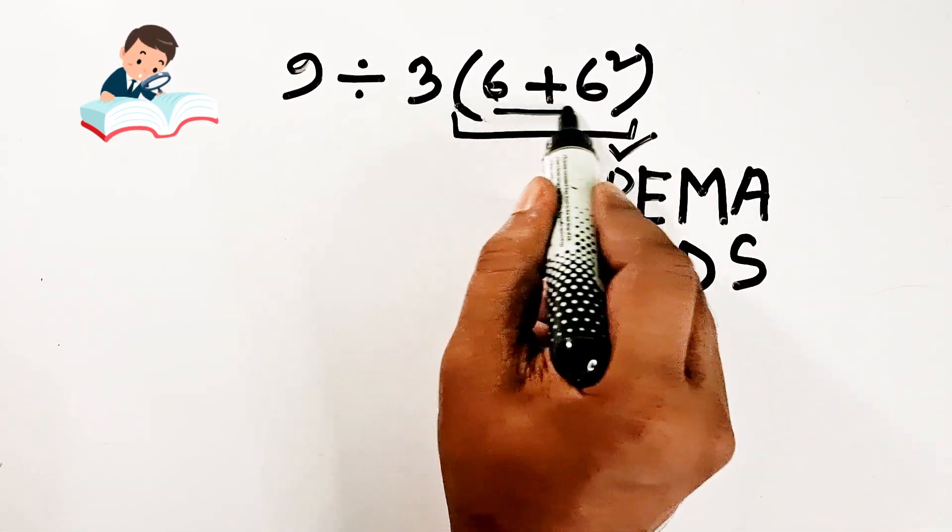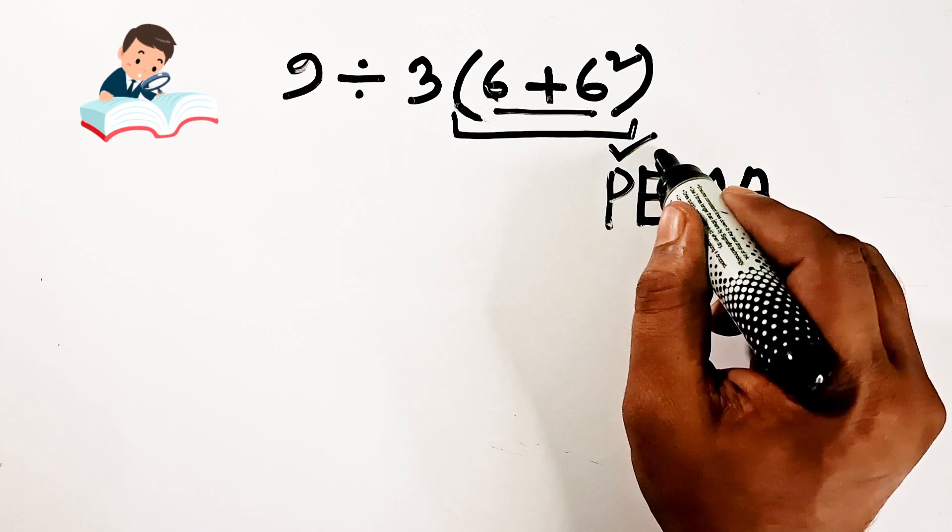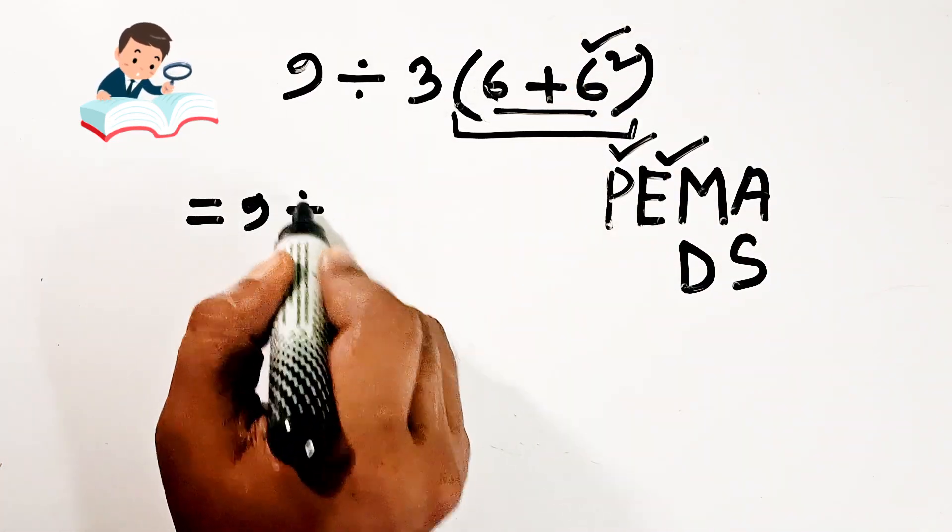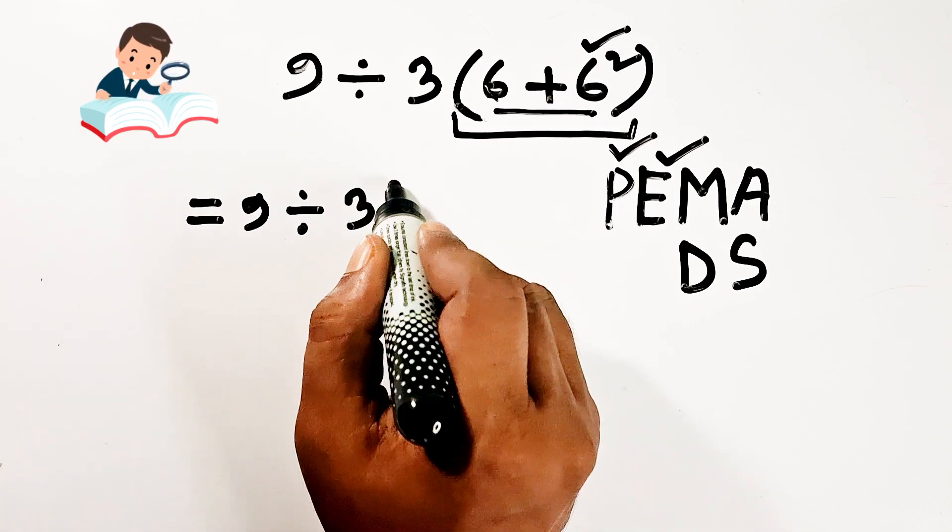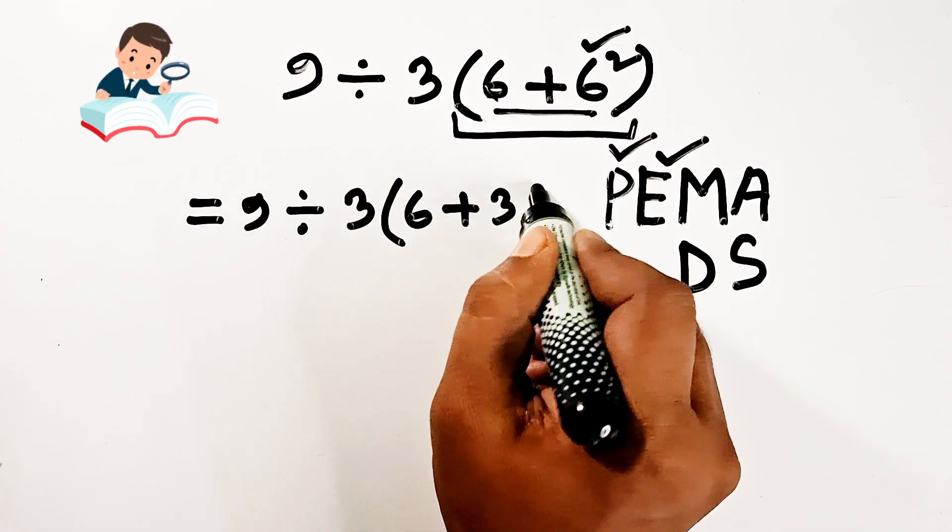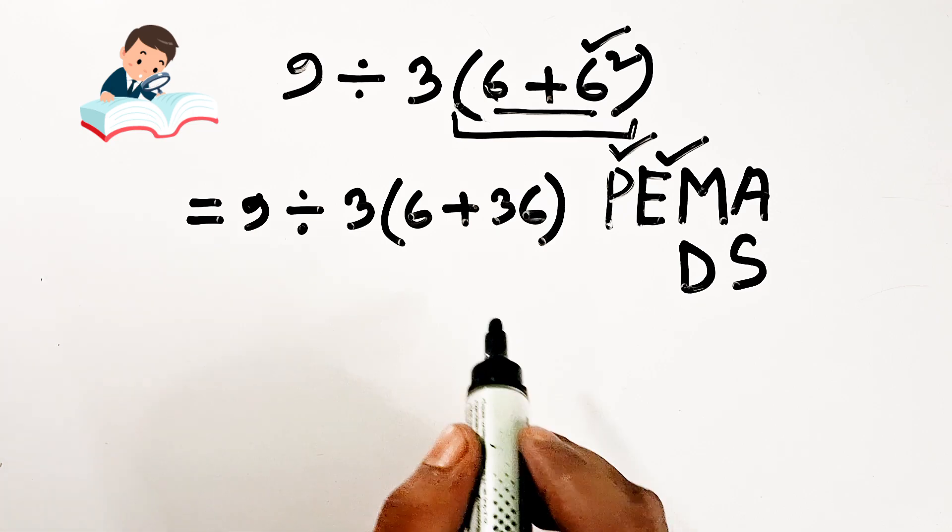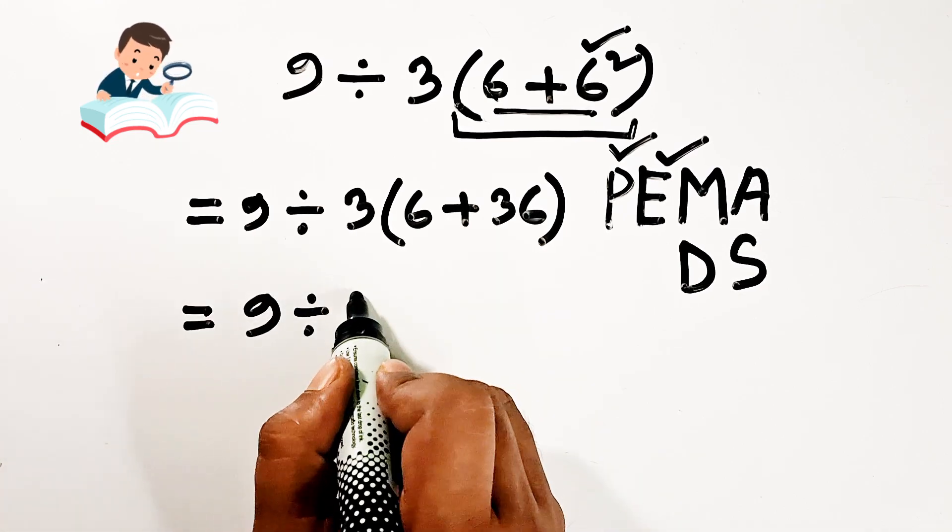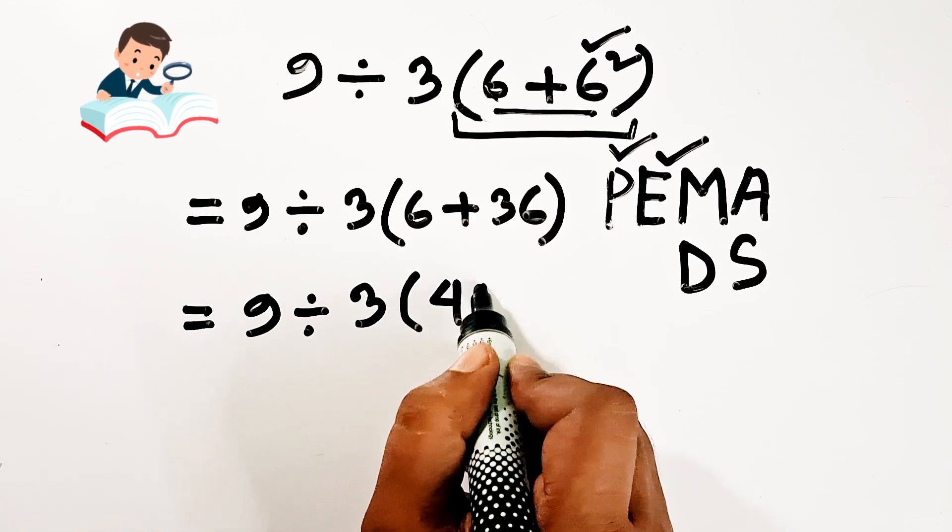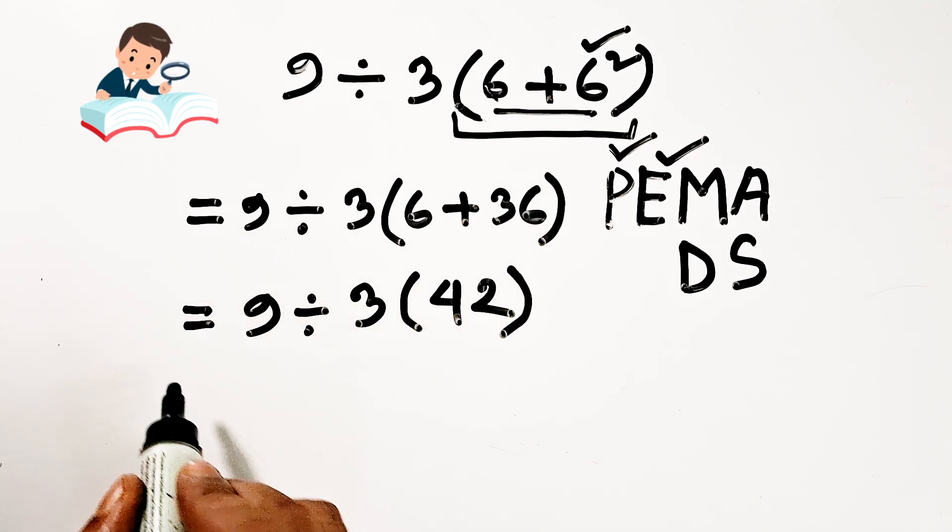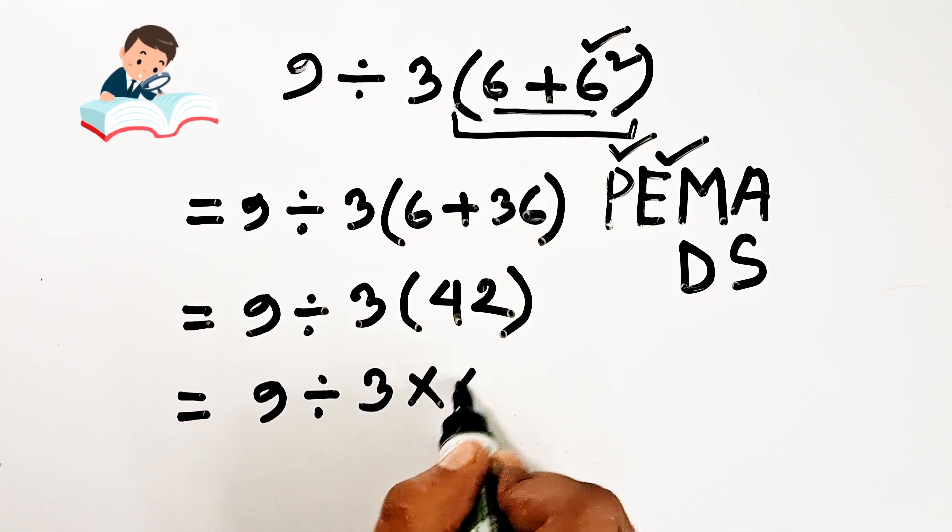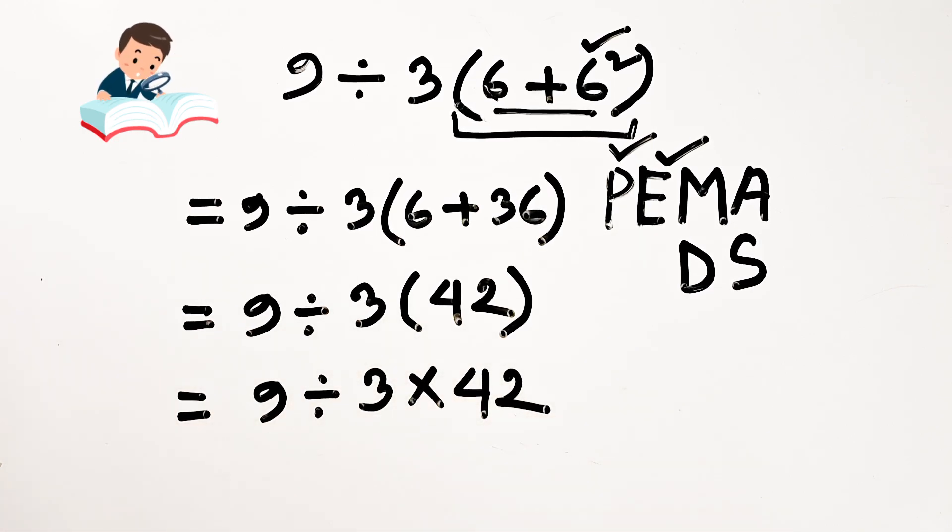We have only one parenthesis, the first bracket. Then exponent. Inside the parenthesis, inside the first bracket, we have to do first the exponent. 6 squared is equal to 36, then 6 plus 36 is equal to 42. Then if we eliminate the parenthesis, we can write as 9 divided by 3 into 42.